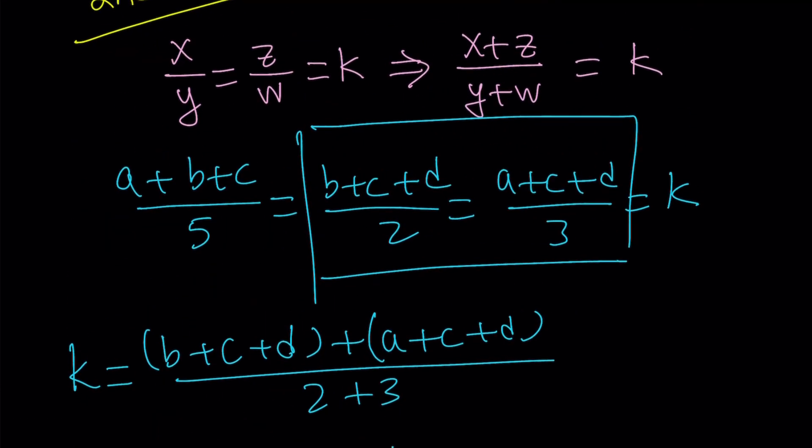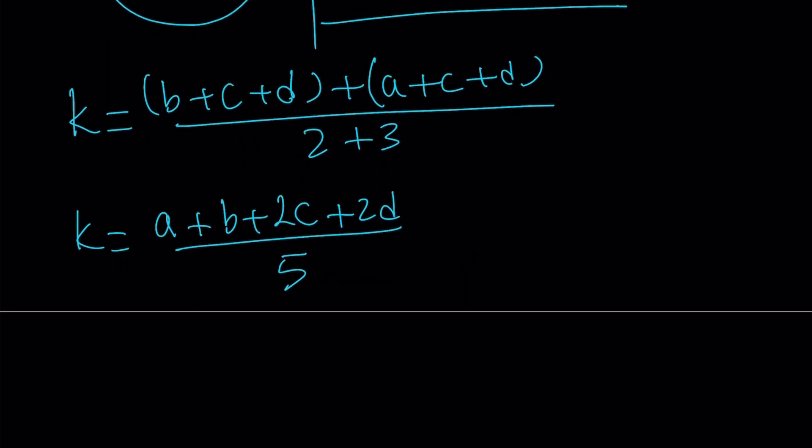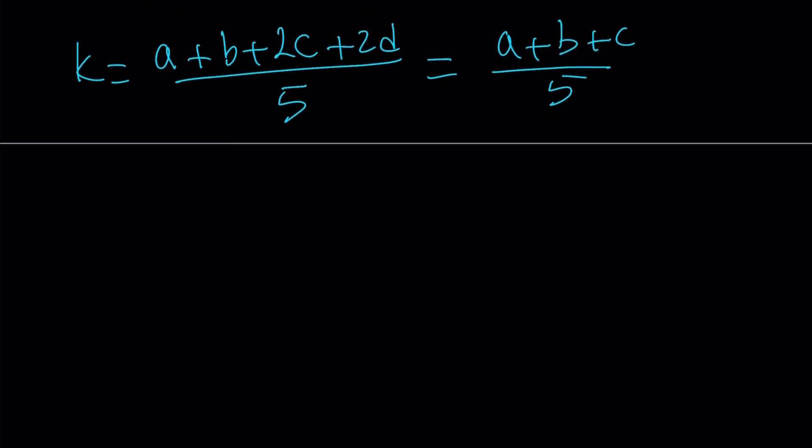But notice that k is also equal to this, which is a plus b plus c over 5. Let's go ahead and set that equal to k, a plus b plus c over 5. This is cool because the denominators are the same. Therefore, I can just compare the numerators. This implies a plus b plus 2c, or not 2c. Do you see what I see? Plus 2d equals a plus b plus c.